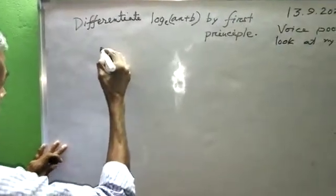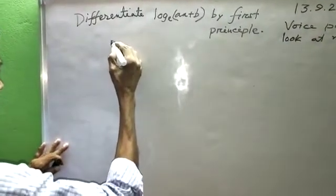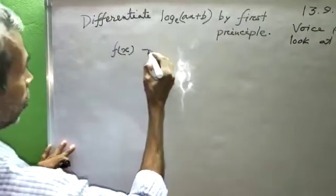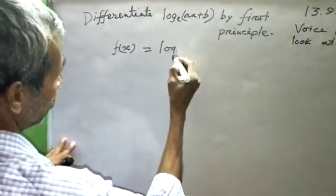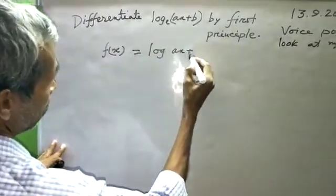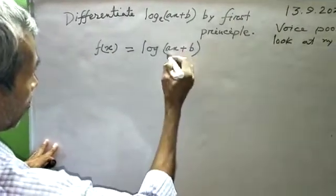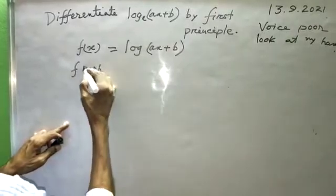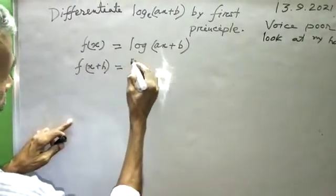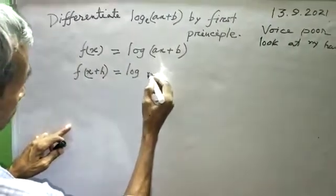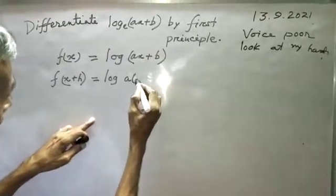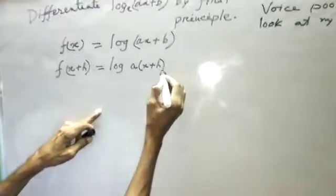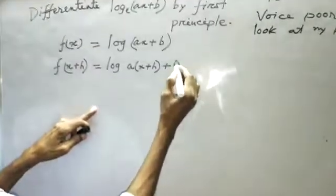Let f(x) = log(ax + b). Therefore f(x + h) = log(ax + ah + b).